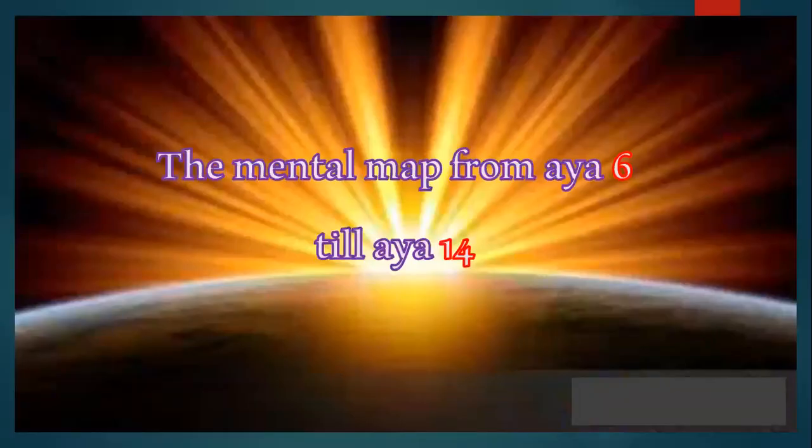Let's go to the third point today: reciting Surah Al-Fajr with the mental map. We will use the mental map to recite Surah Al-Fajr from Ayah 6 to Ayah 14. Mental map means Al-Kharita Al-Zihniya in Arabic — it gives the translation and meaning of the ayat. Look at the picture and repeat after me, to know the meaning of the ayat.